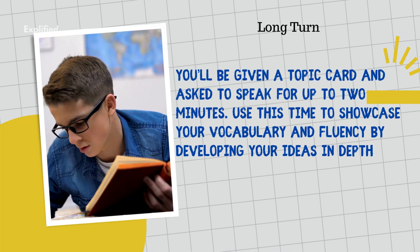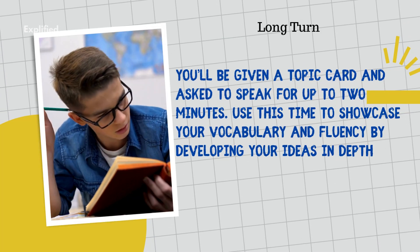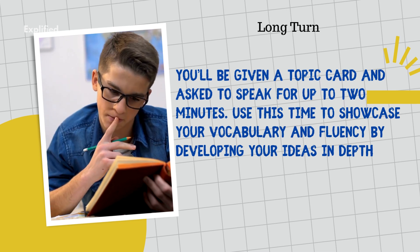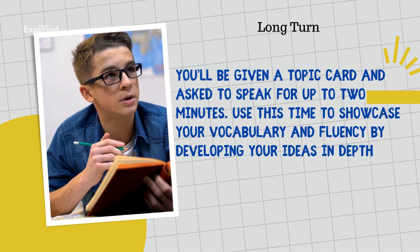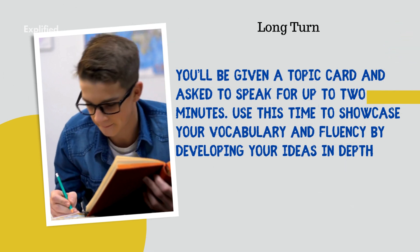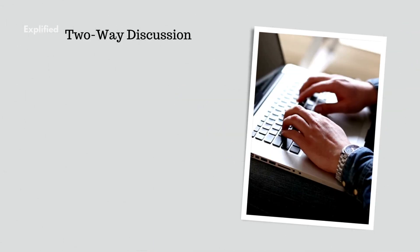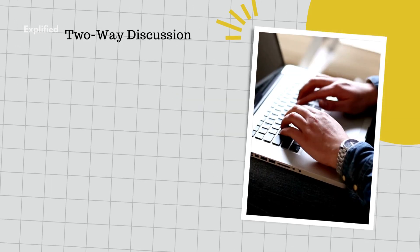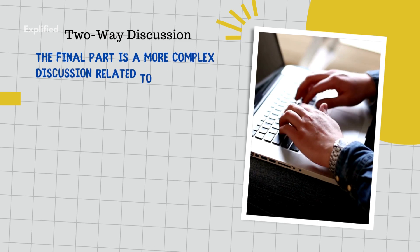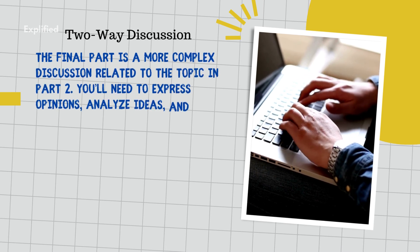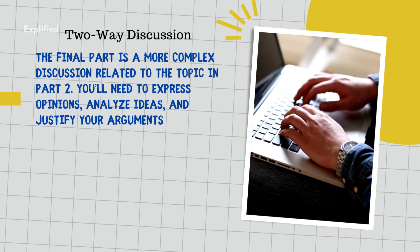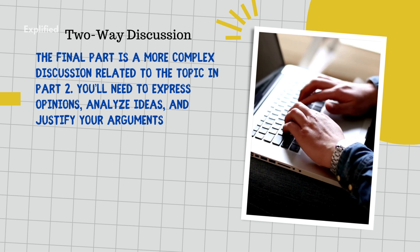In Part 2, the Long Turn, you'll be given a topic card and asked to speak for up to two minutes. Use this time to showcase your vocabulary and fluency by developing your ideas in depth. In Part 3, the Two-Way Discussion, the final part is a more complex discussion related to the topic in Part 2 — you'll need to express opinions, analyze ideas, and justify your arguments.